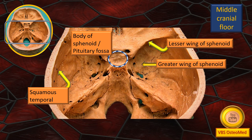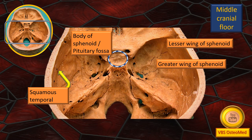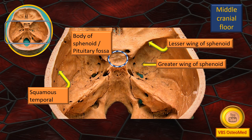Next, there is another arrow — a straight arrow — which is the greater wing of the sphenoid. In a later discussion, between the lesser wing and the greater wing, we will identify the superior orbital fissure.